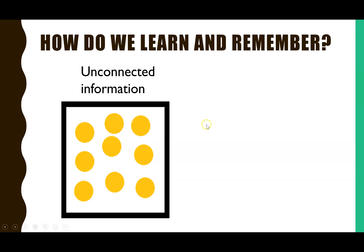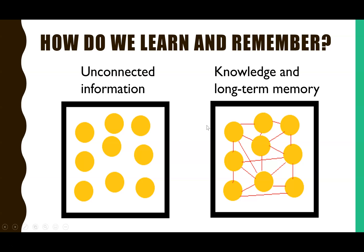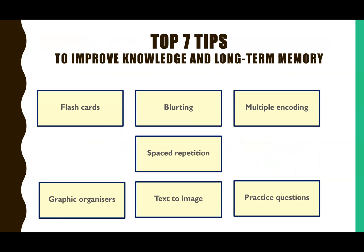What you need to do to learn and remember is turn that into knowledge so you can apply it as a long-term memory. The way to do that is to connect the dots between all of those key terms and facts to make sure you understand them. These are the top seven tips based on neuroscience and educational research for how to revise best and improve long-term memories.